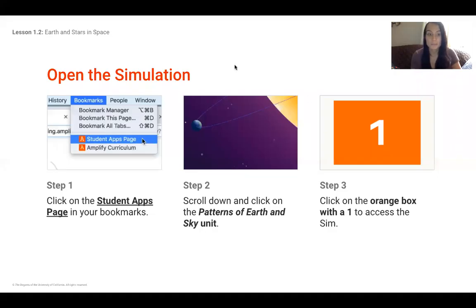When you get there, you're going to go to the student app page. You'll bookmark it after you go there. Then you're going to scroll all the way down and find this image and click on Patterns of Earth and Sky. Step three, you're going to click on the orange box with the number one. At the end, if you're having trouble, I will go over how you get there.